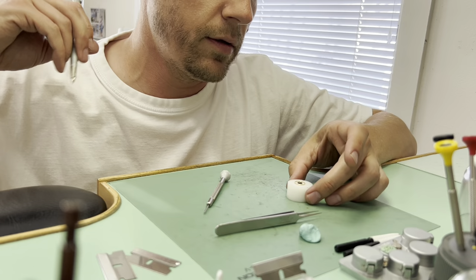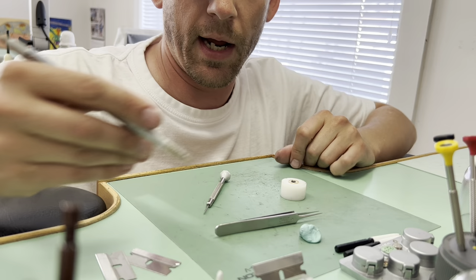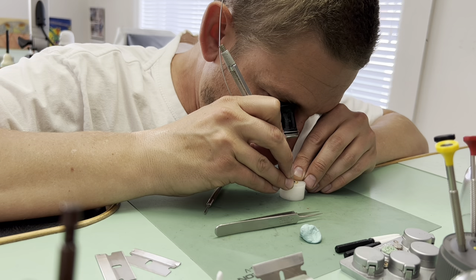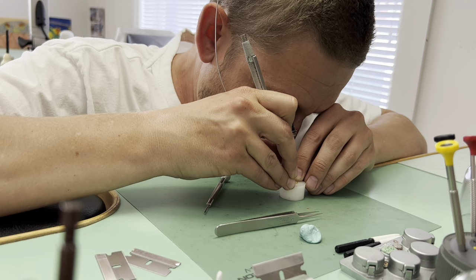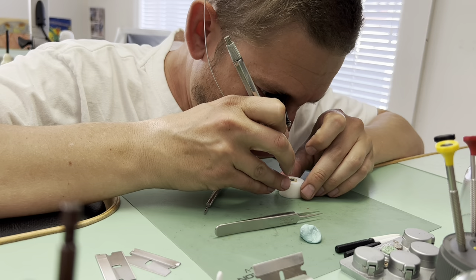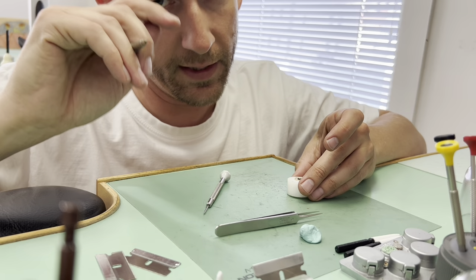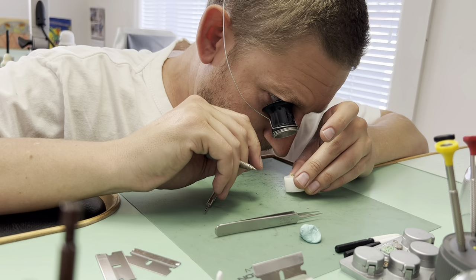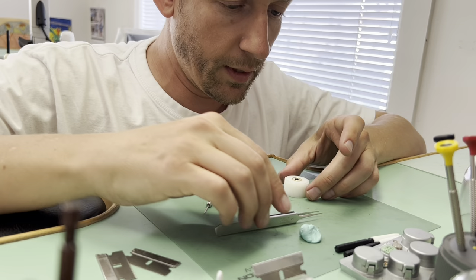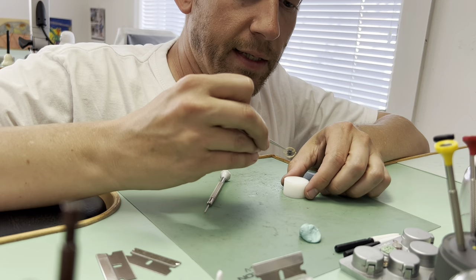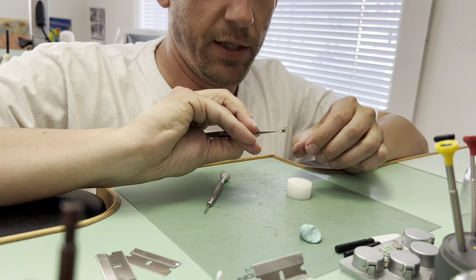Some people use a sharpie to mark it, but I use a little pen here. I put a little dimple on the rim. I can tell this has been done before because there is another dimple right there. So that's actually a good thing because it's going to be easy for me to spot.